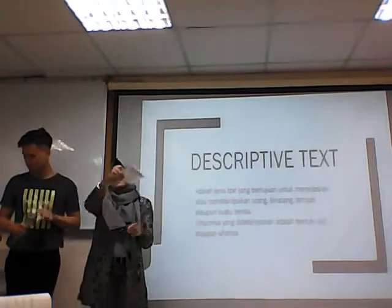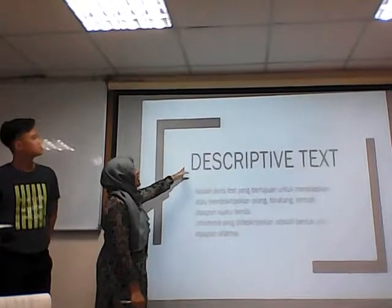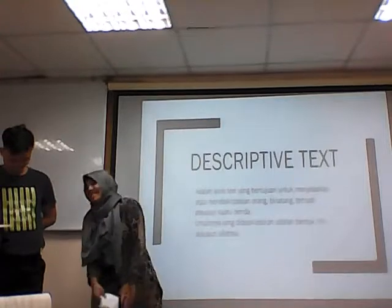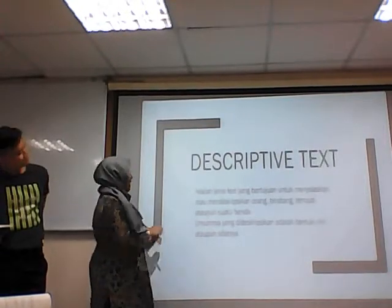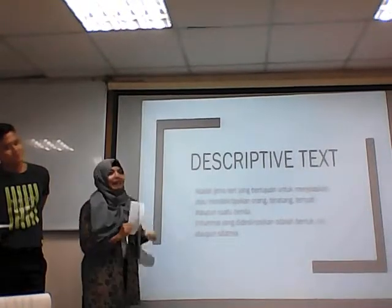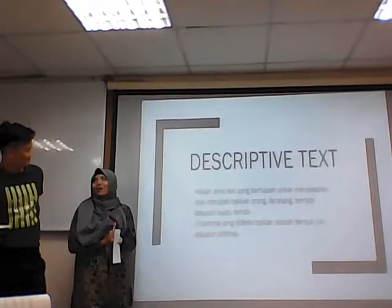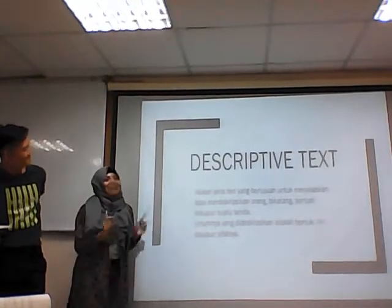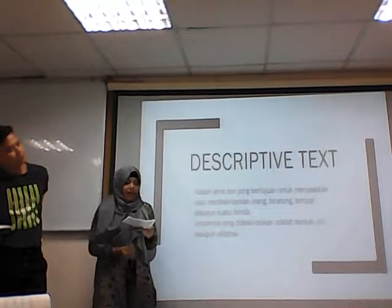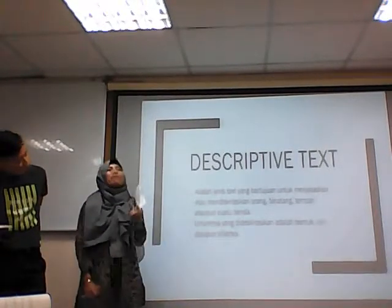We want to describe what is descriptive text. Descriptive text adalah jenis text yang bertujuan untuk menjelaskan atau mendeskripsikan orang, binatang, tempat ataupun suatu benda. Umumnya yang dideskripsikan adalah bentuk, ciri ataupun sifatnya — misalnya bagaimana bentuknya, terbuat dari apa, fungsinya apa, dan bagaimana memfungsikannya.